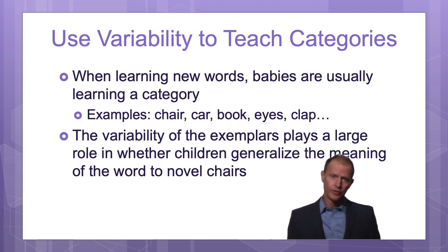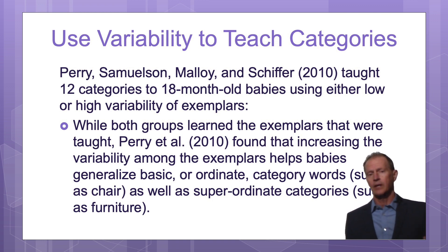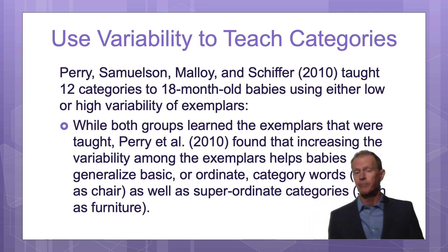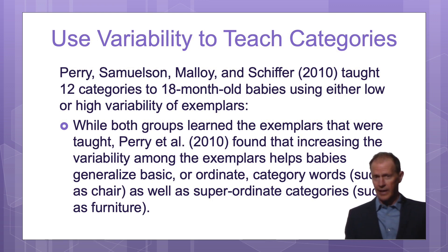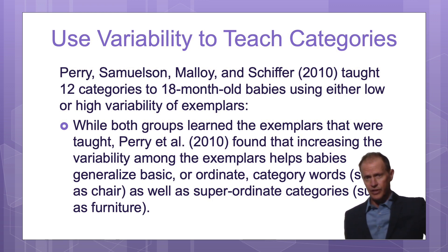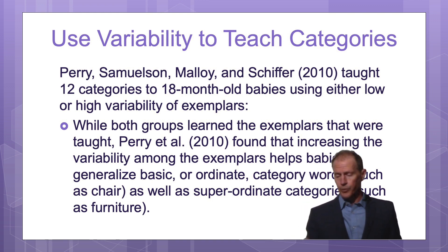Add variability when you're teaching categories, and it will increase your baby's learning. There's research showing that 18-month-old babies had either high variability or low variability, and the ones with high variability learned many more words and actually generalized much better. If they saw new items, they were more accurate in categorizing them. If you make all the objects look very similar, the baby will have a harder time generalizing what the words mean.